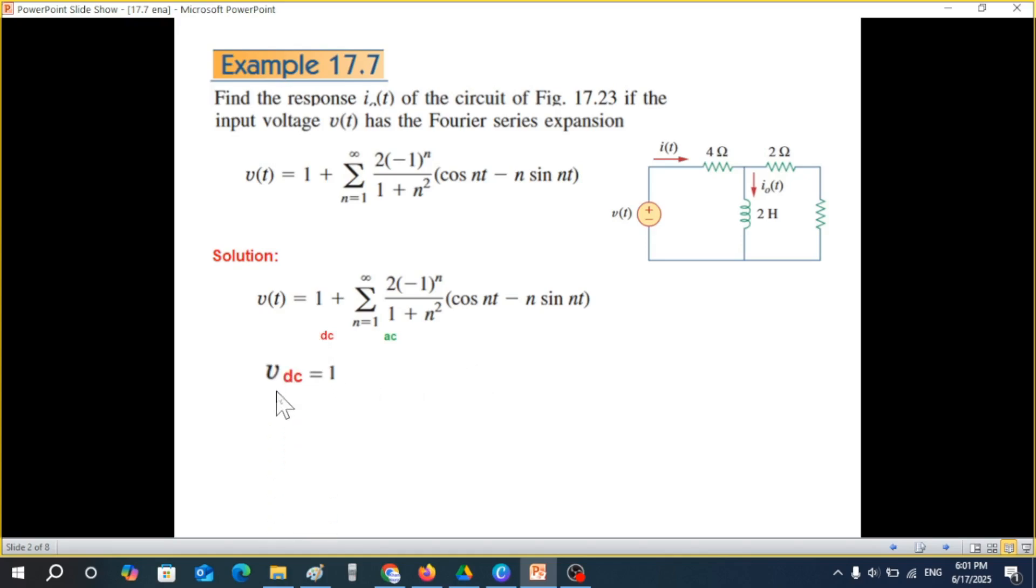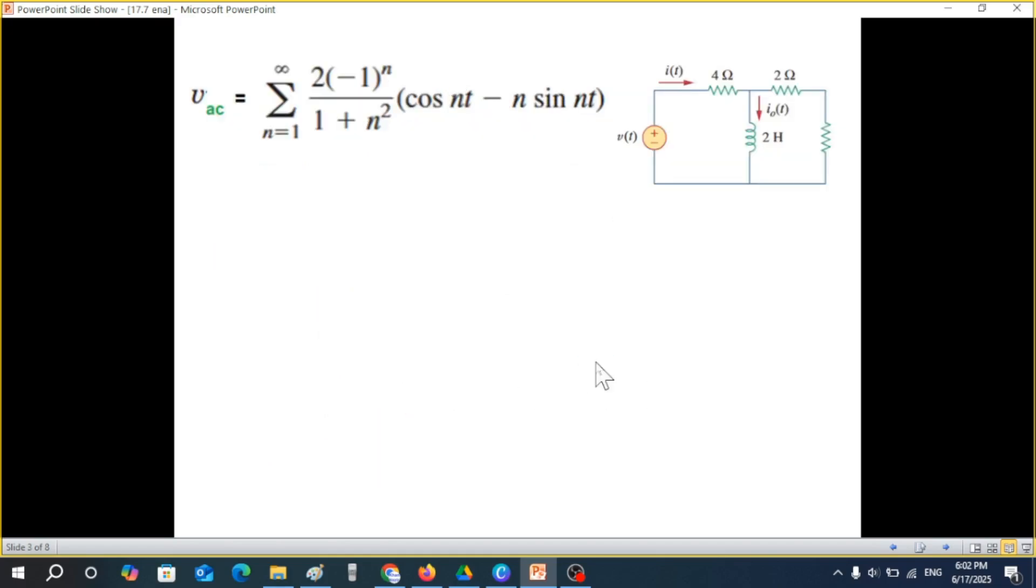We can call VDC to be one volt from here, and the remaining part we'll call VAC. So we'll primarily now deal with the AC part. DC we have already found. This is the AC signal.